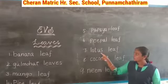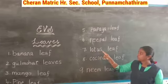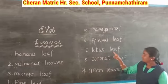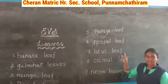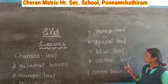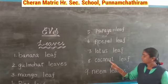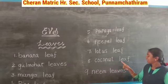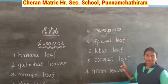Lotus leaf: L, O, T, U, S — lotus. L, E, A, F — leaf. Lotus leaf. Coconut leaf: C, O, C, O, N, U, T — coconut. L, E, A, F — leaf. Coconut leaf.